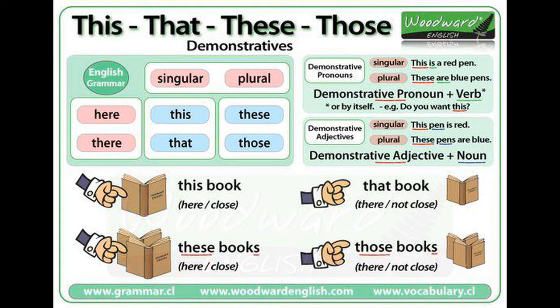'That' and 'those' are used for something that is far away in distance or time. 'That' is used for singular nouns and 'those' for plural nouns. For example: 'That child over there looks lost.' 'Those seagulls there at the beach look terrifying.'